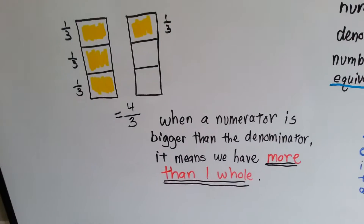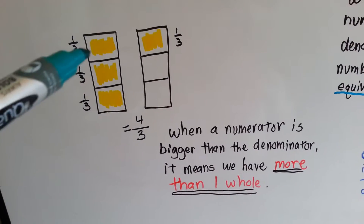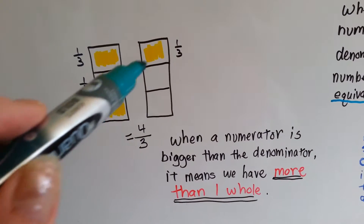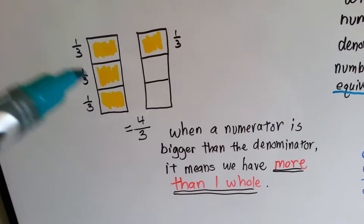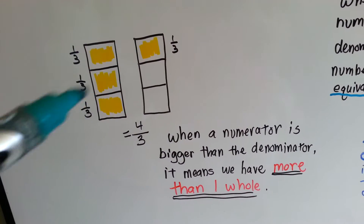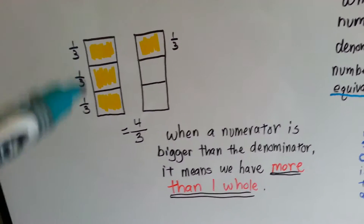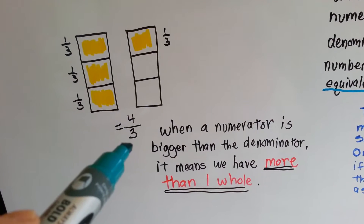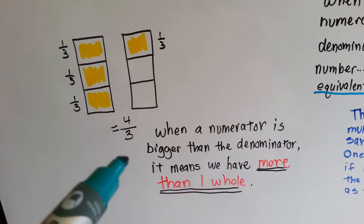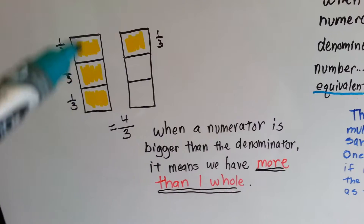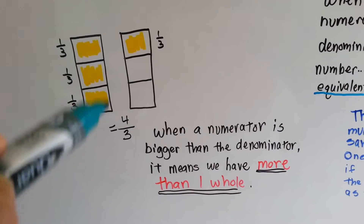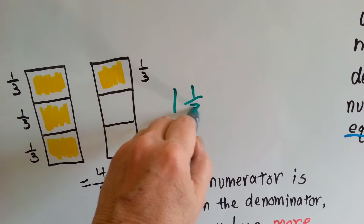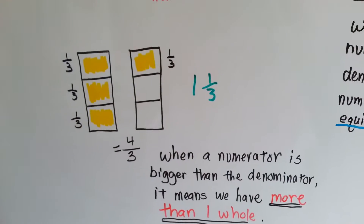Now there's something else I want to show you before we get to our cookie recipe. If I had a third filled in, and a third filled in, and a third filled in — and then another third filled in a second box — I would have one, two, three, four-thirds. The numerator is allowed to be bigger than the denominator. When the numerator is bigger than the denominator, we have more than one whole. We have one and one-third. Four-thirds is equal to one and one-third.